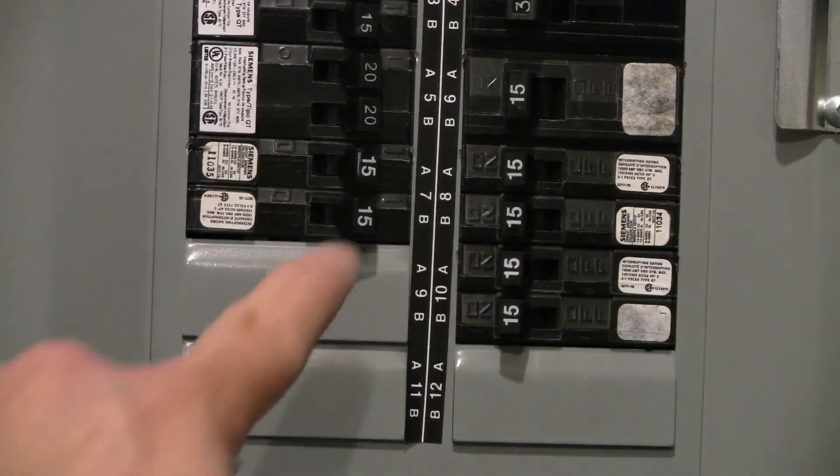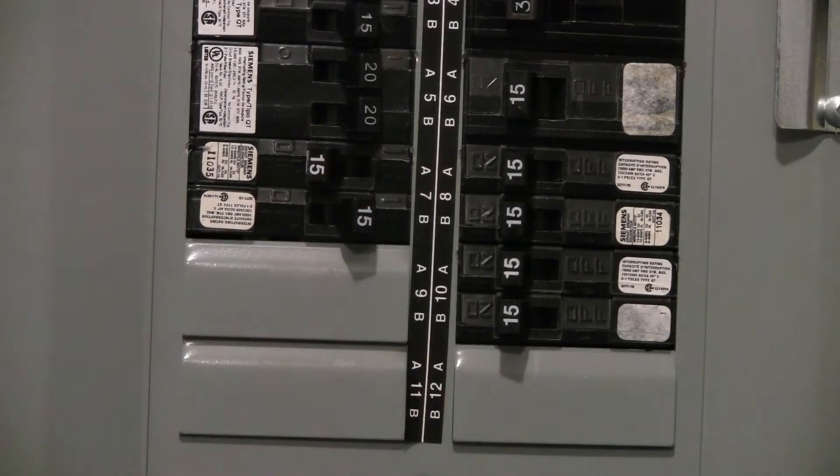The last thing before we get started: safety first. Turn the light switch off and then turn the circuit breaker off to this light. You need to make sure there's no power running to that switch. If this switch is in a multi-switch box, make sure that you have turned off the power to the circuits for all of those switches.